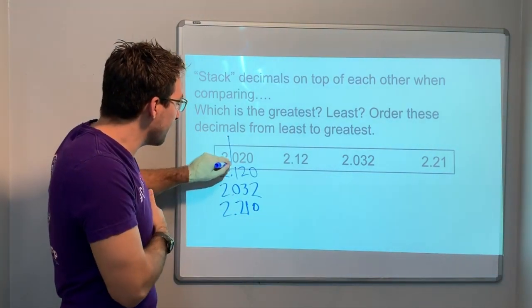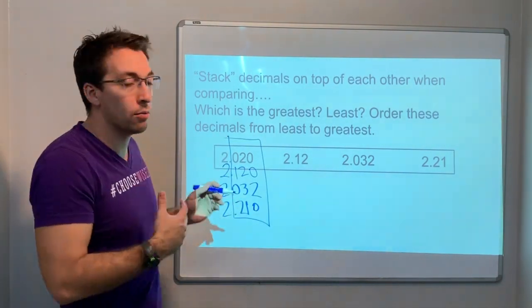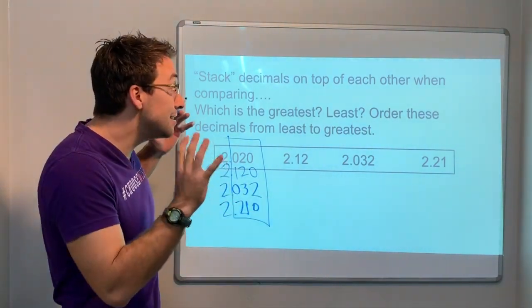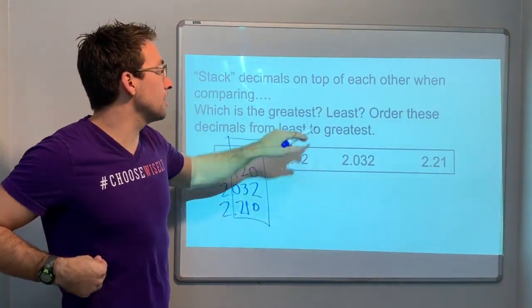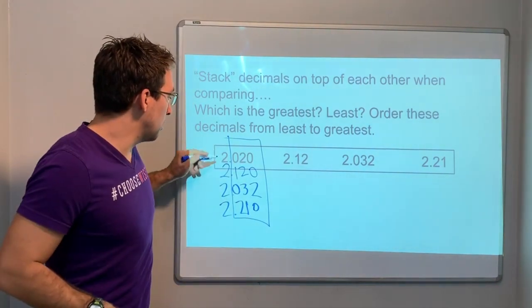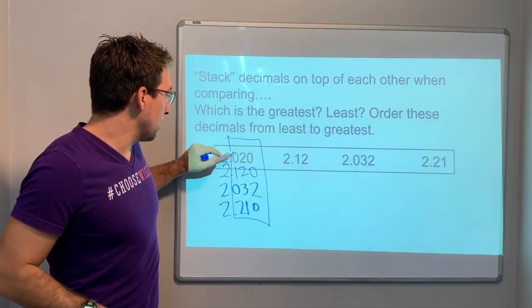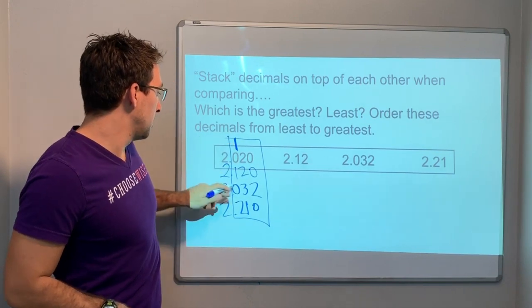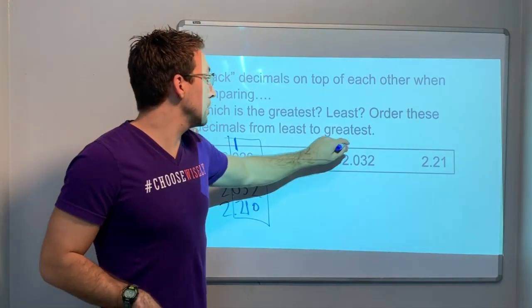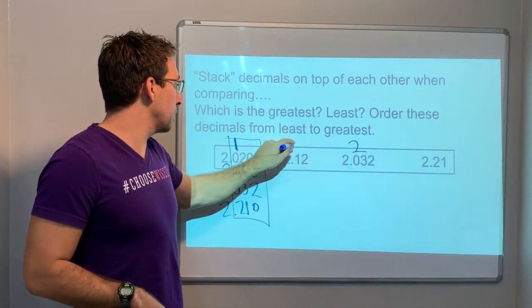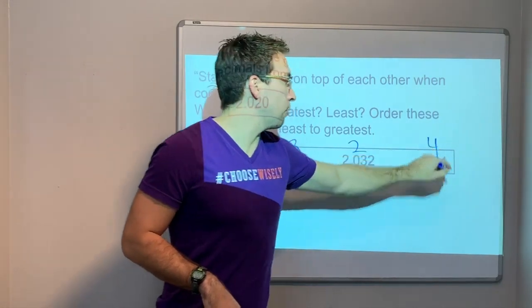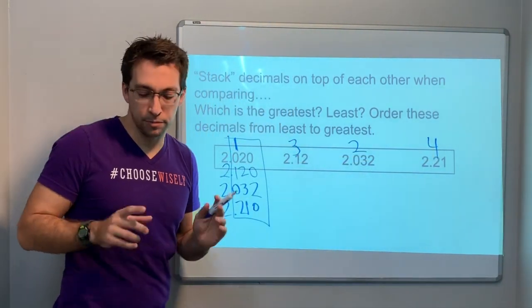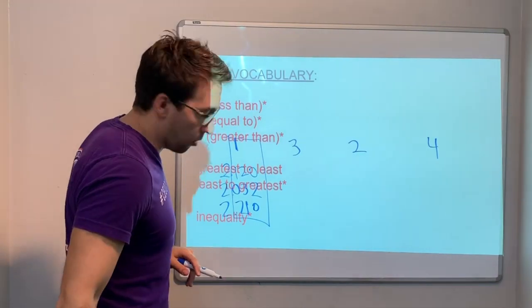And then two and 200, or 210 — add a zero to make it 210. When you stack them, it's easier to compare which number is biggest and which is smallest. So ordering from least to greatest: 20 is first, 32 is second, 120 is third, and 210 is fourth.